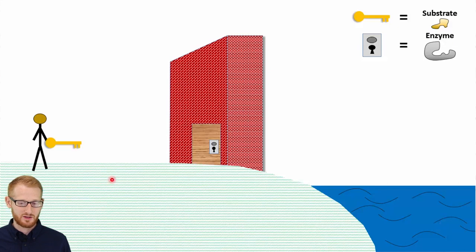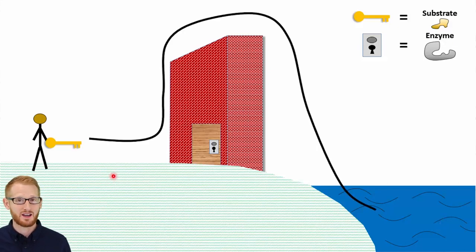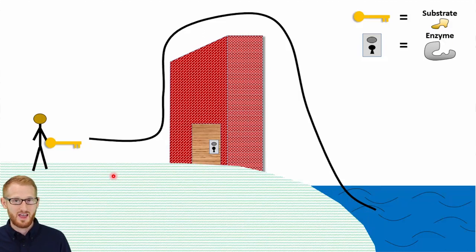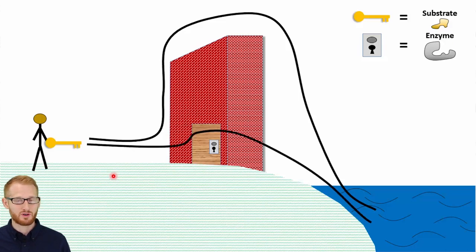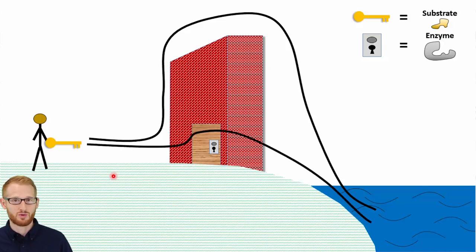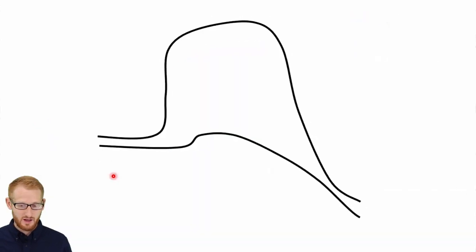They can either go above the wall, which is going to take a lot of energy, or if they have the right key for the door — essentially the right enzyme and substrate — they can go right through the door and down to the ocean, and it lowers the energy required.